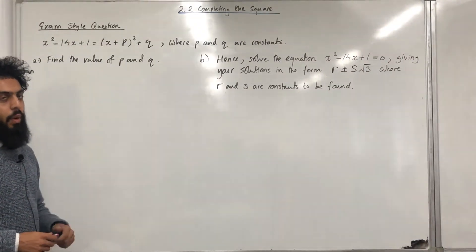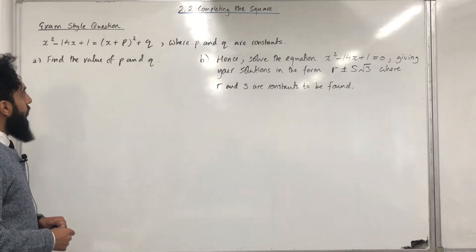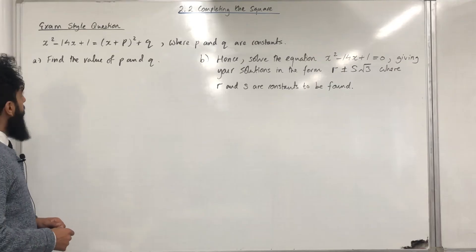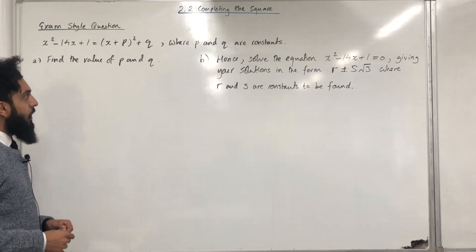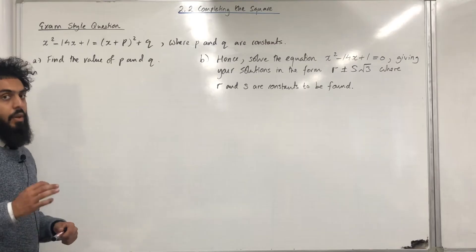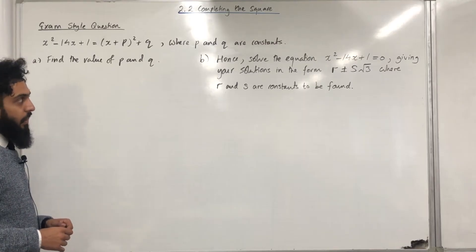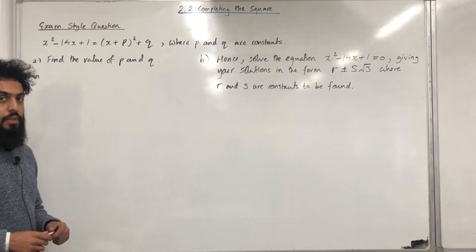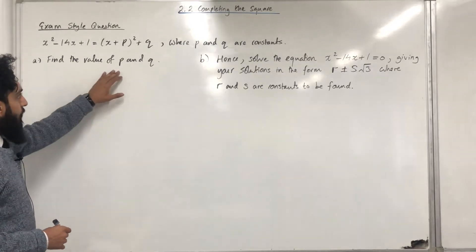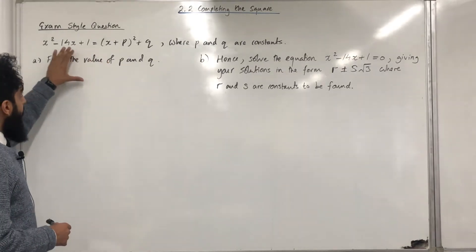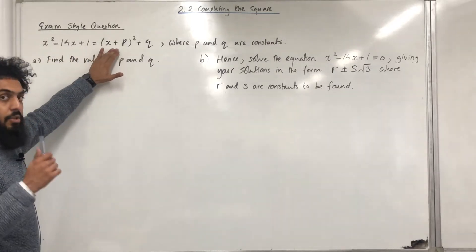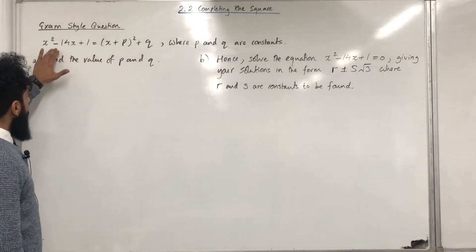Here is an exam-style question. x² − 14x + 1 is equivalent to (x + p)² + q, where p and q are constants. Part A: find the values of p and q. Part B: hence solve x² − 14x + 1 = 0, giving your solution in the form r ± s√3 where r and s are constants. To find p and q we need to rewrite the quadratic in completed-square form by completing the square.